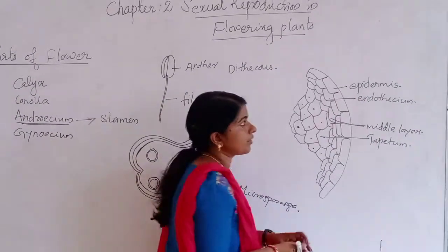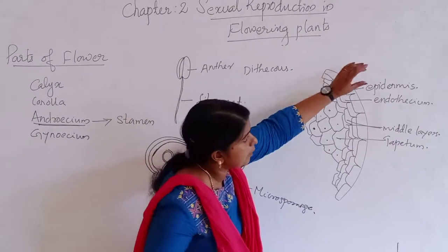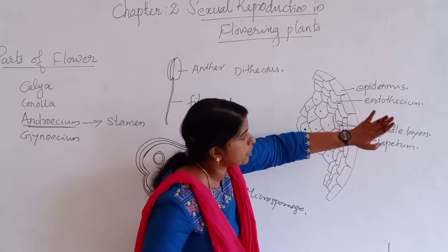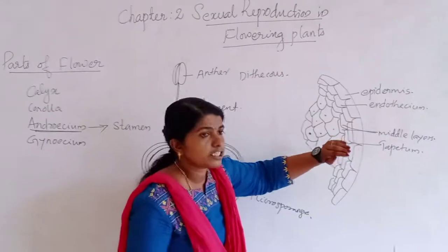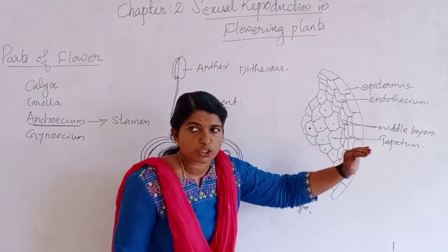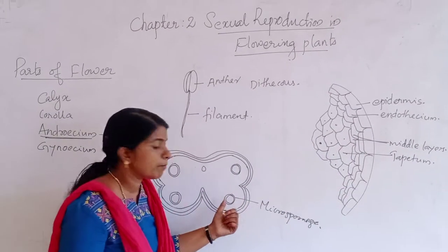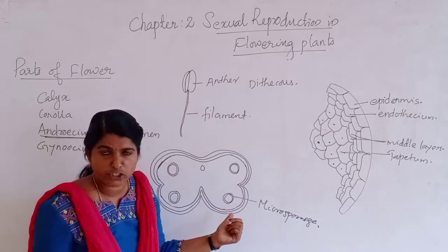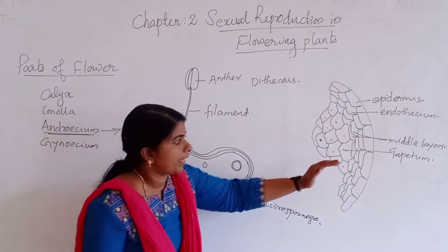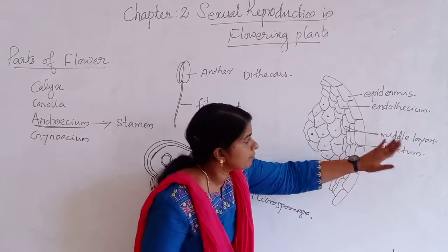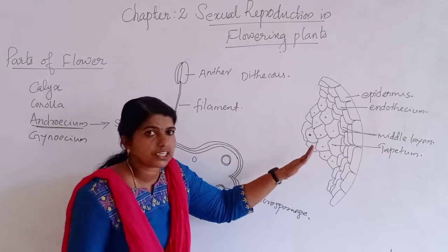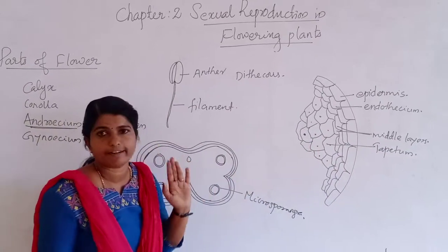Of these four layers, the outer three — epidermis, endothecium, and middle layers — provide protection to the developing microsporangia. Whereas the tapetum nourishes the developing spores.